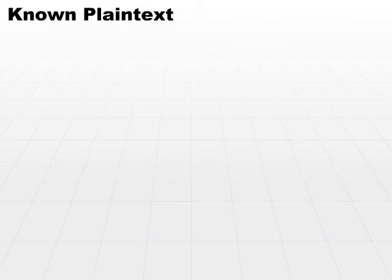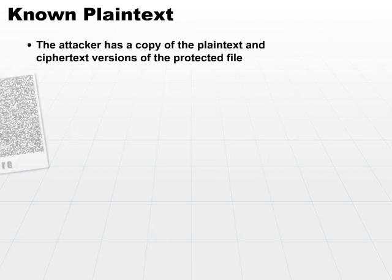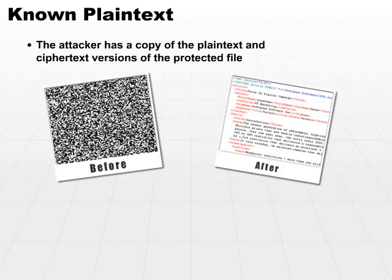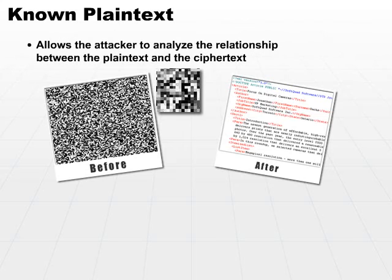In addition to the brute force attack, there's also another common attack called the known plain text attack. In this attack, the attacker has a copy of the plain text and the ciphertext version of the protected file — so he has before and after pictures. This allows the attacker to analyze the relationship between the plain text and ciphertext.